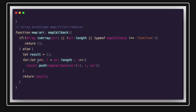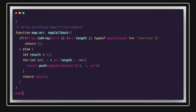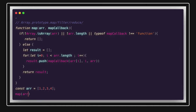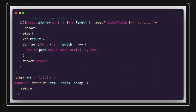Now you can call this custom map function. I created a const array with some values, and a callback function that receives item, index, and array. Whatever you want to return, you can — for example, returning item plus one. This is the custom map implementation.